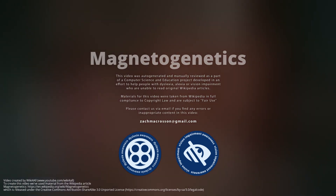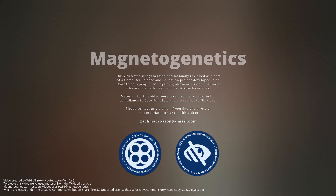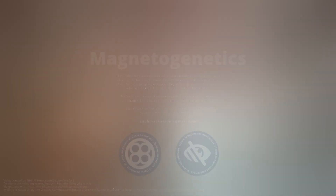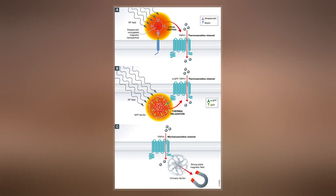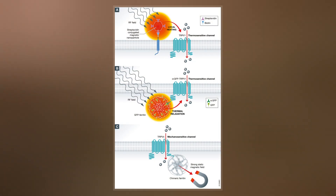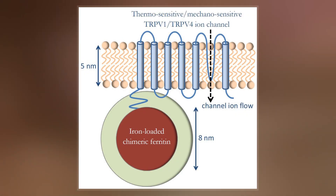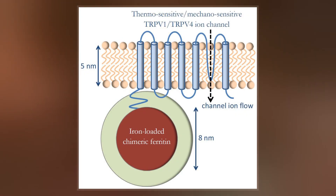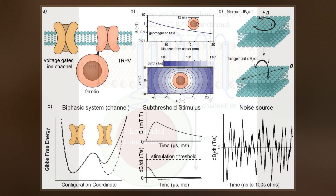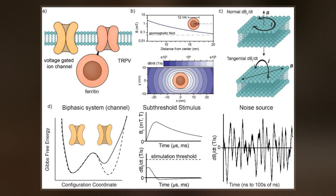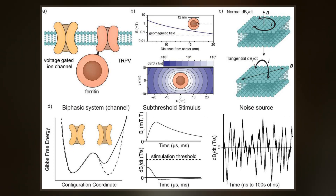Magnetogenetics refers to a biological technique that involves the use of magnetic fields to remotely control cell activity. In most cases, magnetic stimulation is transformed into either force or heat, which depends on the applied magnetic field. Therefore, cells are usually genetically modified to express ion channels that are either mechanically or thermally gated.